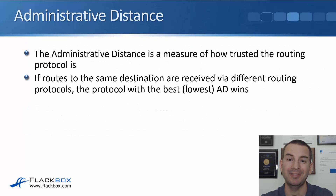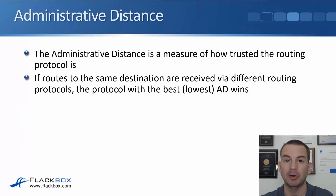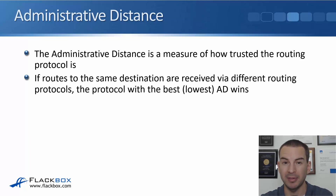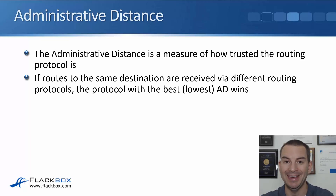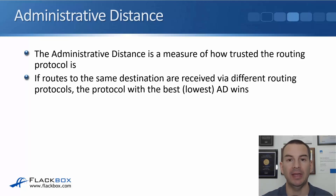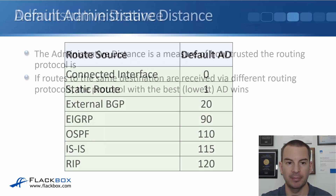The administrative distance is a measure of how trusted a particular routing protocol is. If routes to the same destination are received via different routing protocols, the protocol with the best, which is the lowest, AD value wins. So with the metric, the lowest is best. With AD, it's the same — the lowest number is best.